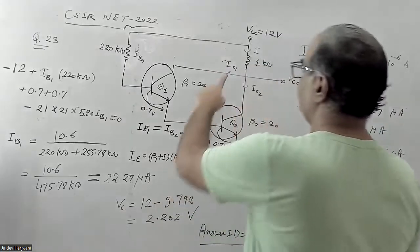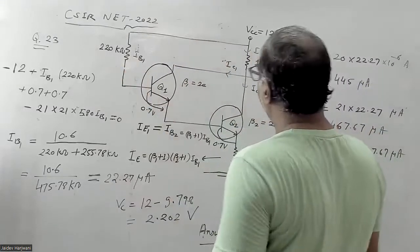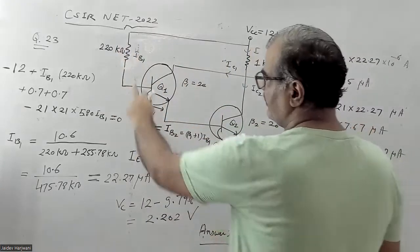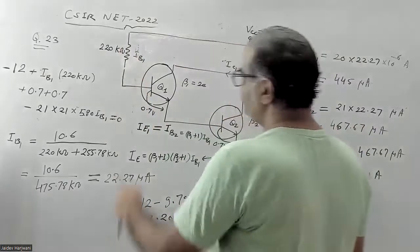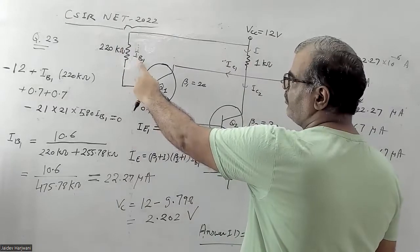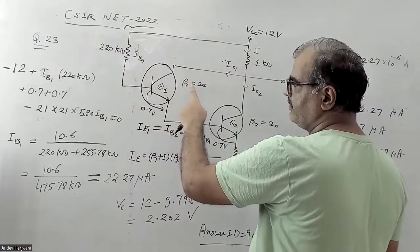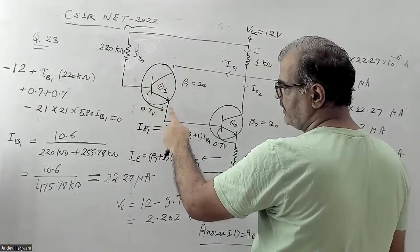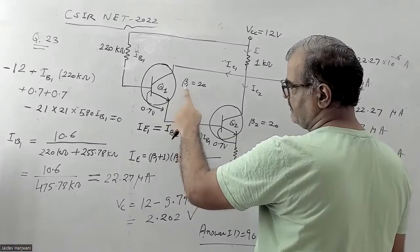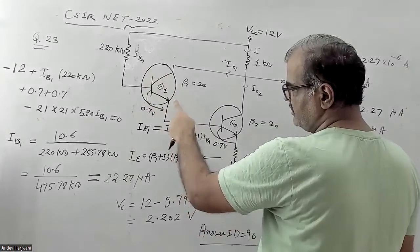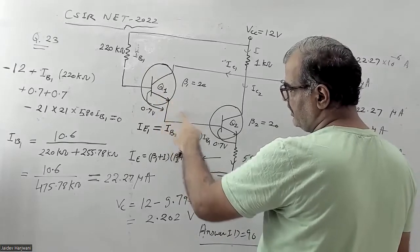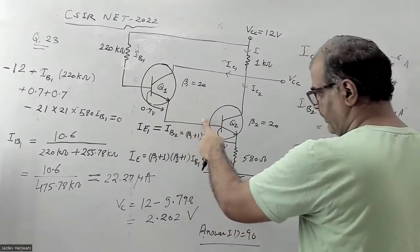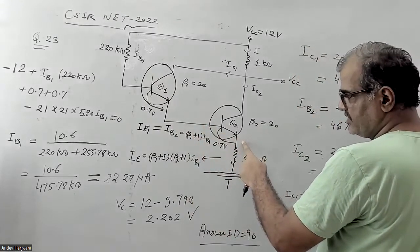We need to apply KVL. Apply KVL in this first loop and calculate what is the current flowing IB1. Once you know IB1, you can calculate IC1 because you know beta here. Similarly, once you know IB1, you can find the emitter current of this first transistor, which is beta 1 plus 1 into IB1. Once you know the IE of the first transistor, we know IB of this second transistor, and once you know IB2, we know IE2 of the second transistor.